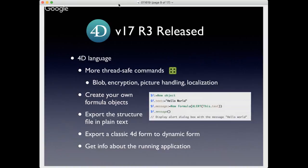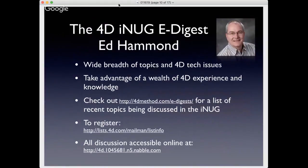R3 also includes the ability to export the structure file in plain text — very useful, and a step in the direction of version control. You can also export a classic 4D form to a dynamic form, easing the transition to forms that are more dynamic, code-controlled, and generated on the fly. And there's the ability to get info about the running application into an object or collection. A lot coming out in R3, and there's a lot being discussed on the iNug — I'll hand it over to Ed Hammond at the Art Institute of Chicago.